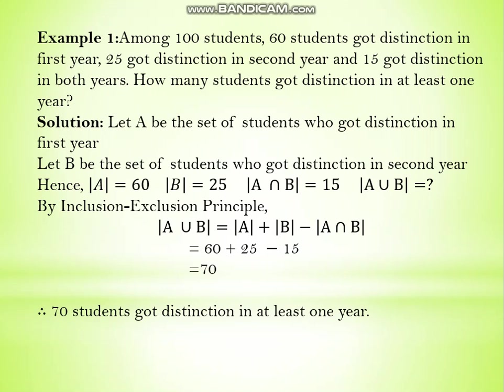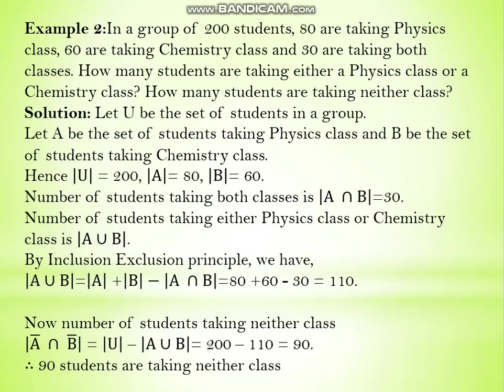In the next example, we have 200 students: 80 are taking physics and 60 are taking chemistry, and 30 are taking both classes. The first question is: how many students are taking either a physics class or a chemistry class? The second question is: how many students are taking neither class? Let U be the set of all 200 students, A the set taking physics, and B the set taking chemistry.